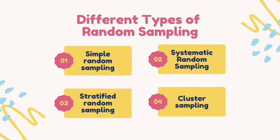We will now proceed on the different types of random sampling. There are four types: simple random sampling, systematic random sampling, stratified random sampling, and cluster sampling. Simple random sampling is the most basic random sampling technique wherein each element in the population has an equal probability of being selected. Systematic random sampling is done by listing all elements in the population and selecting every nth element. It is equally precise as simple random sampling and is often used on long population lists. The formula used is K = N/n, or population divided by sample size.